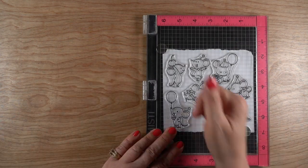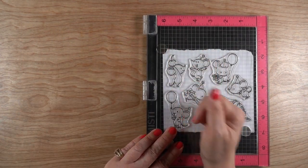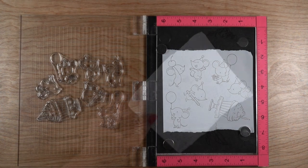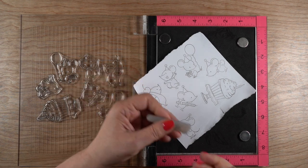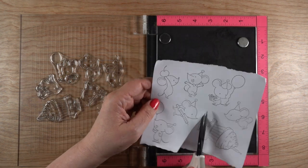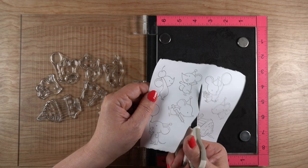I'm stamping it with a dye ink because if you stamp it with a pigment ink you'll get it all over your fingers unless you let it dry. So just use a nice dye ink that dries quickly. Then I use my detail scissors for this - these are my EK Success scissors.